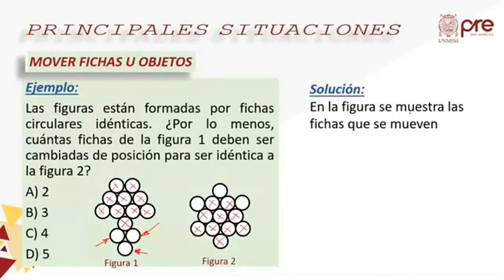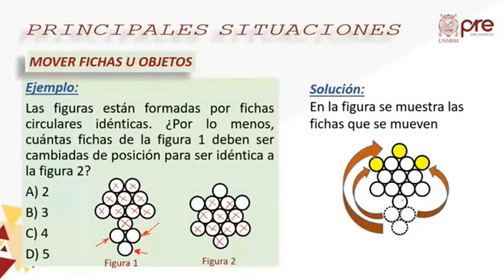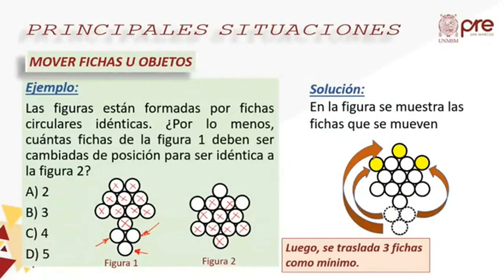El primer tipo de situación es cuando piden mover fichas u objetos. Por ejemplo: las figuras están formadas por fichas circulares idénticas. ¿Cuántas fichas de la figura 1 deben ser cambiadas de posición para ser idéntica a la figura número 2? Las alternativas son: A=2, B=3, C=4 y D=5. ¿Cuántas hay que trasladar?